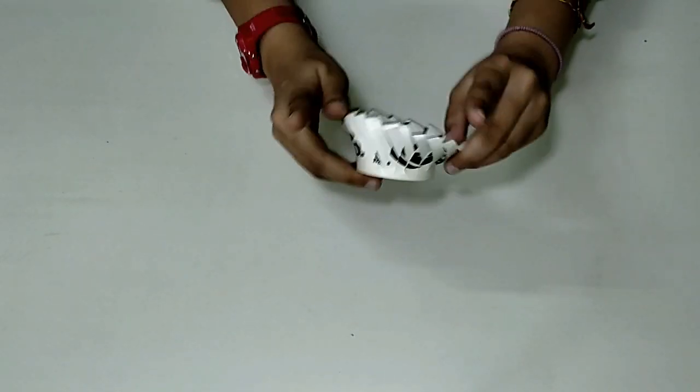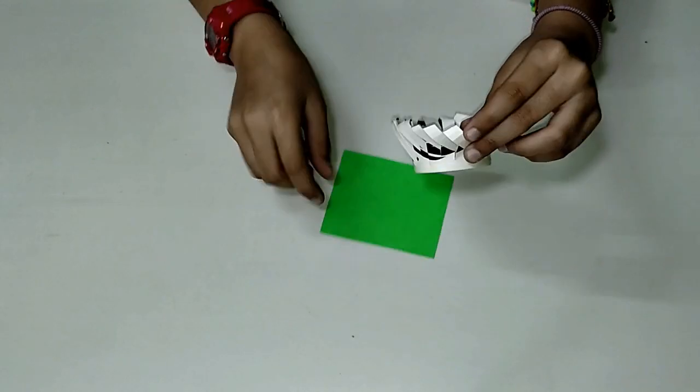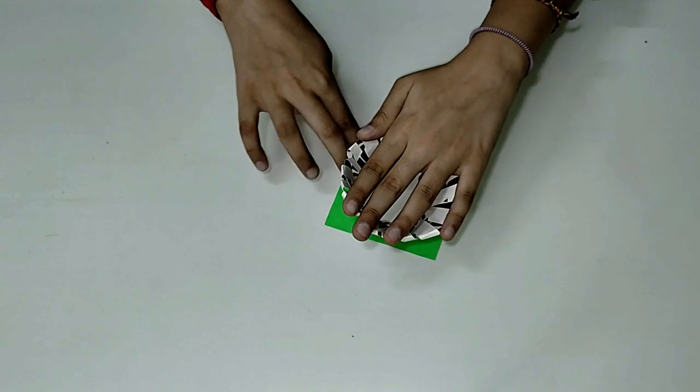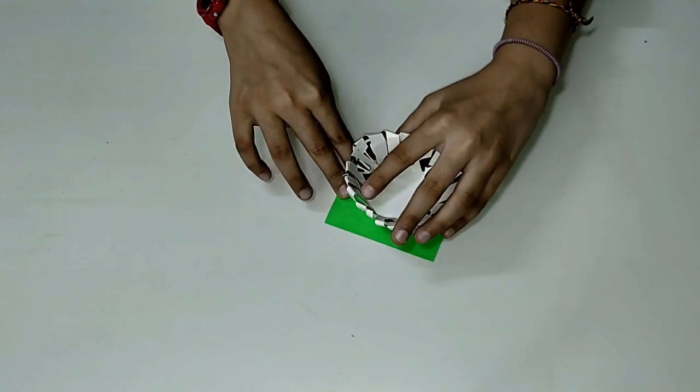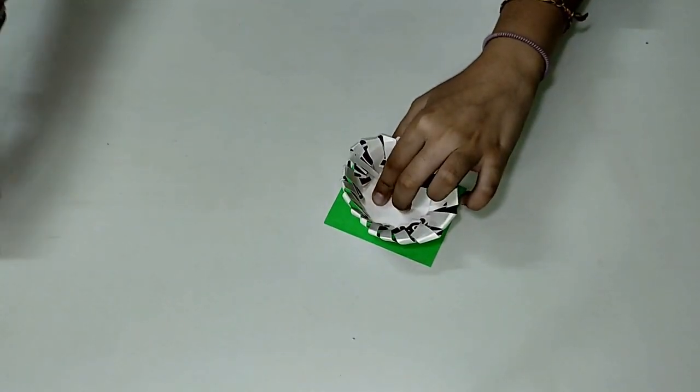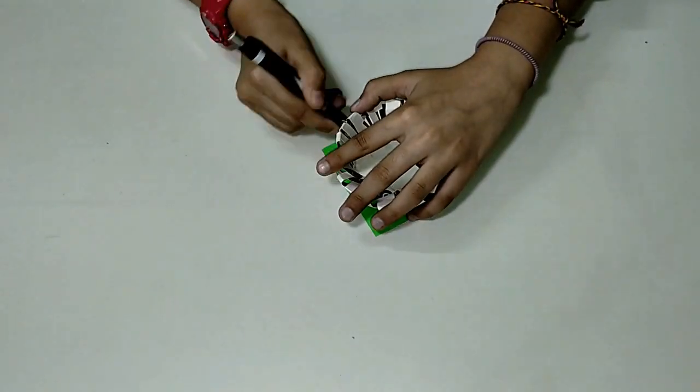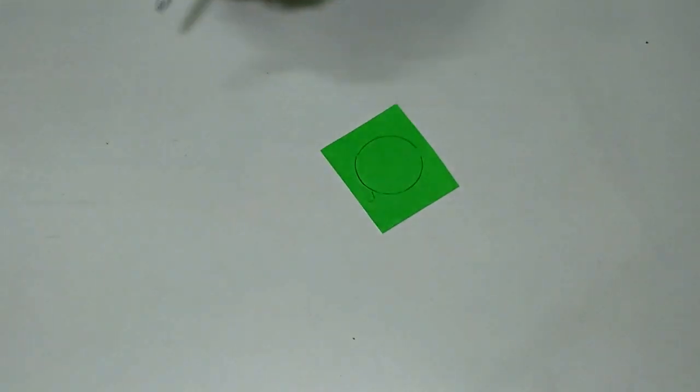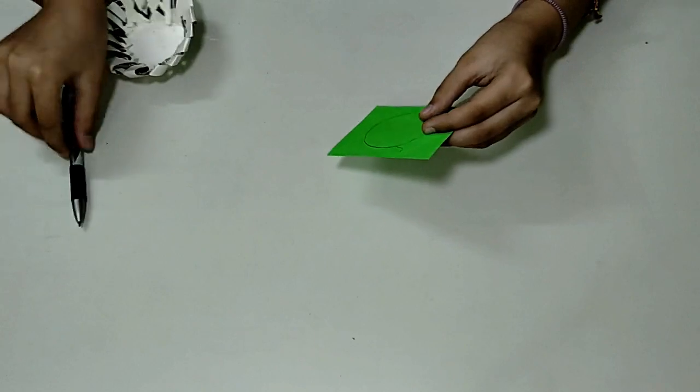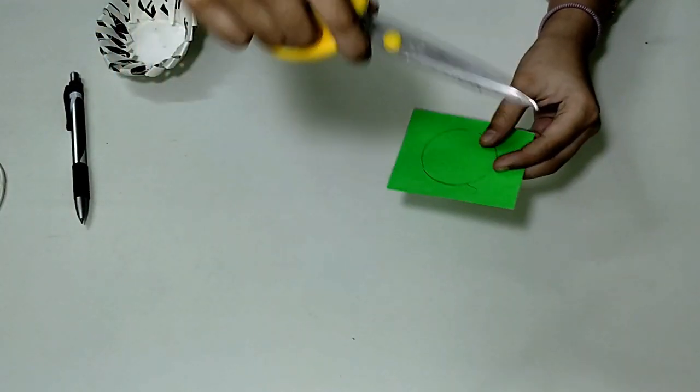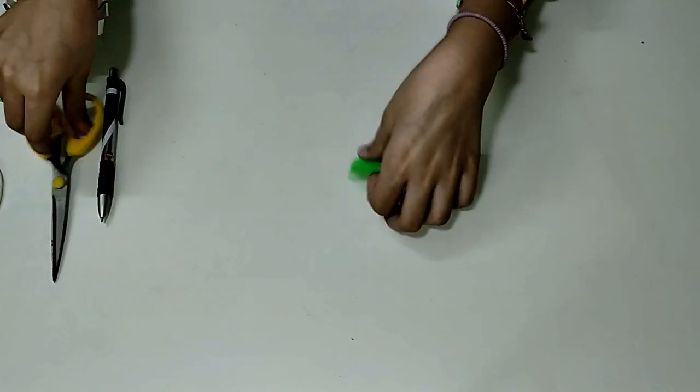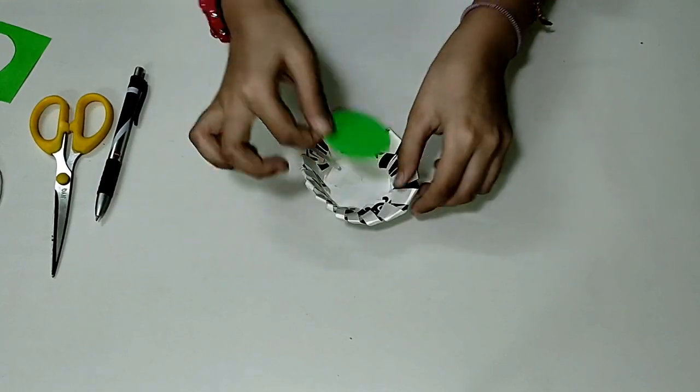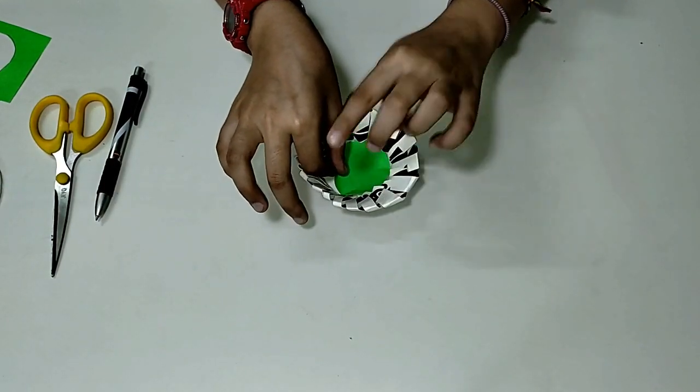Now it's time for the next step in which we will take this paper and we will trace the base of the cup on this paper and cut it out. Once it is ready, we will cut it out. There we go. Now we are ready with this piece. Next step we have to paste this in the middle of the cup.